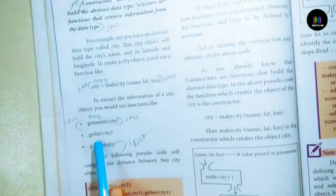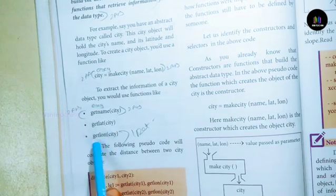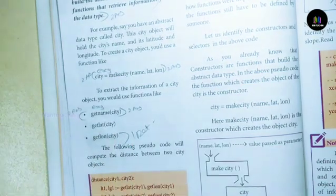Selectors. Example: get_name city, get_lat city, get_lon city. This is the selector concept.